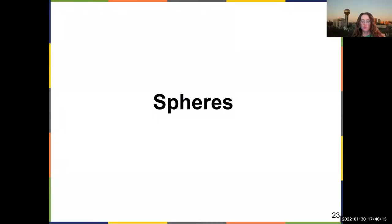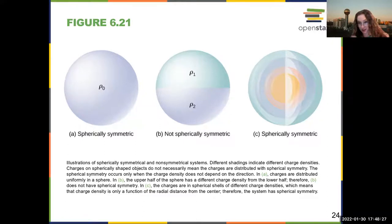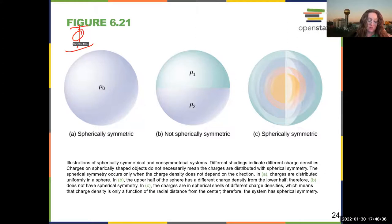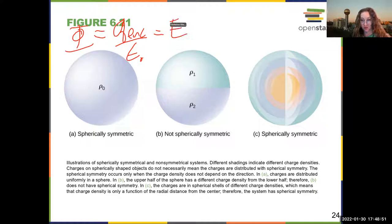Spheres are our friends in physics — we love spheres. We can often use Gauss's Law to determine the electric field. If the electric field is constant over a surface, and we can calculate the flux of a closed surface, the flux is equal to the charge enclosed divided by epsilon naught. And if your electric field is constant, that is also equal to your electric field times the area of the surface.